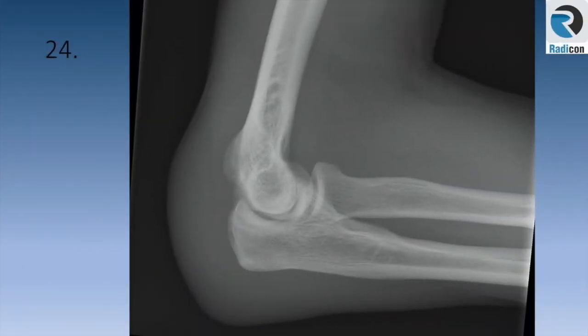Case 24: apparently normal bones with adequate articulation, normal joint congruity, no obvious effusion, fracture, or dislocation. However, once you review the soft tissues, there is extensive swelling on the posterior aspect of the elbow joint in keeping with olecranon bursitis.